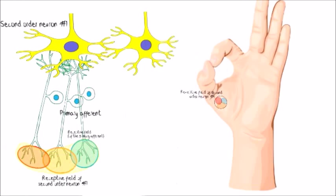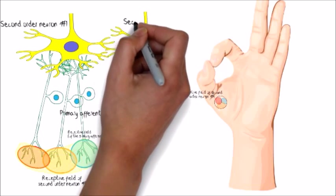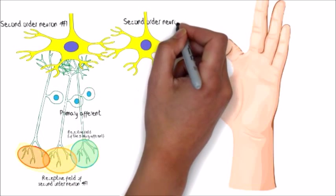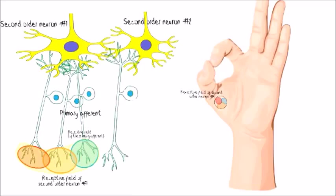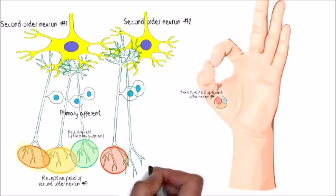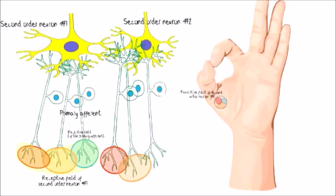Now, let's add a second dorsal horn neuron and the primary afferents that transmit the information from its receptive field. Again, those receptive fields would be specific for each primary afferent and each second-order neuron, reflecting the body area.